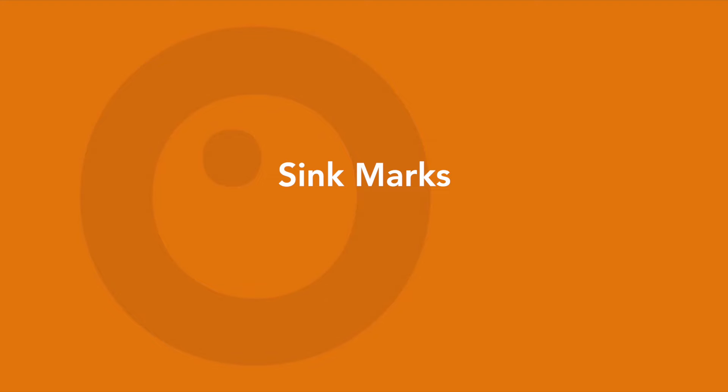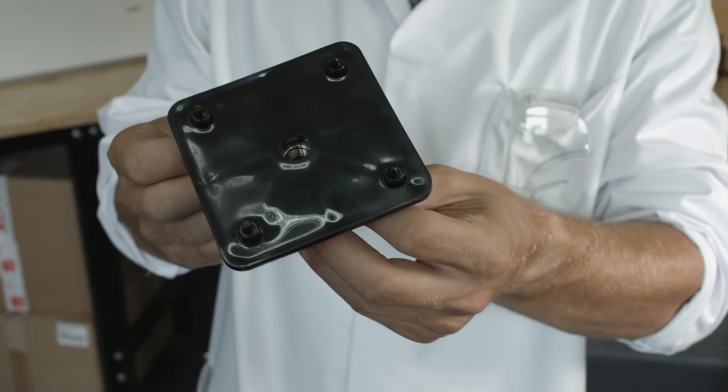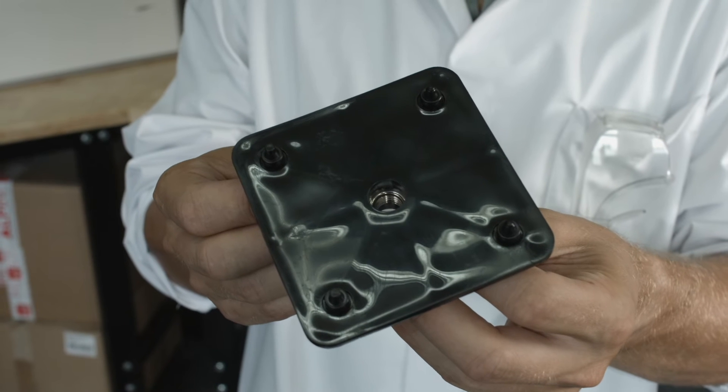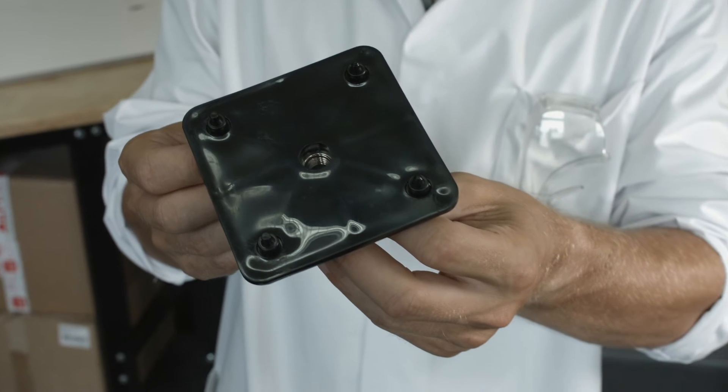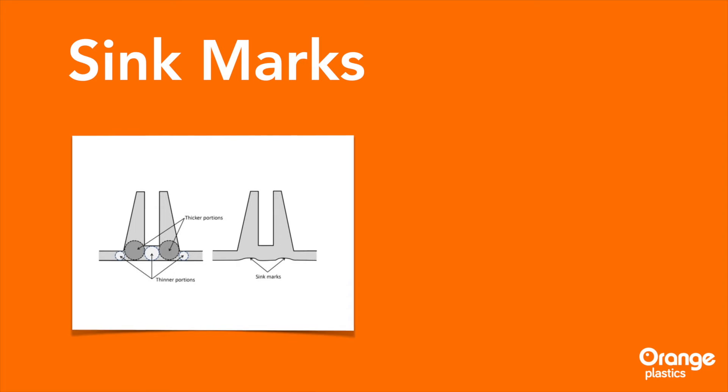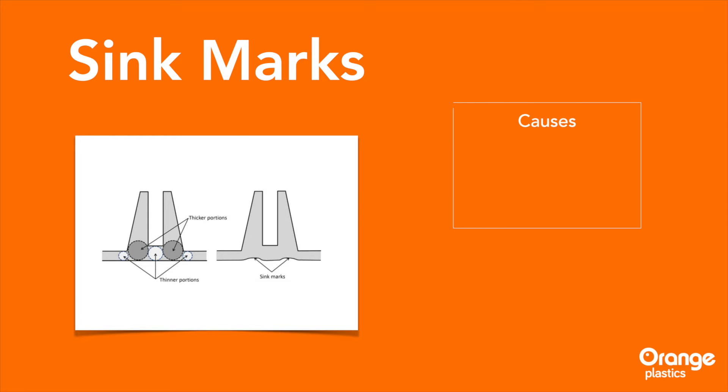Sink Marks. Sink marks are small craters that develop in thicker areas of the product when shrinkage occurs in the inner portions. They are often caused by insufficient cooling due to uneven wall thickness, but can arise from low injection pressure or too high temperatures surrounding the area where plastic enters the mold.